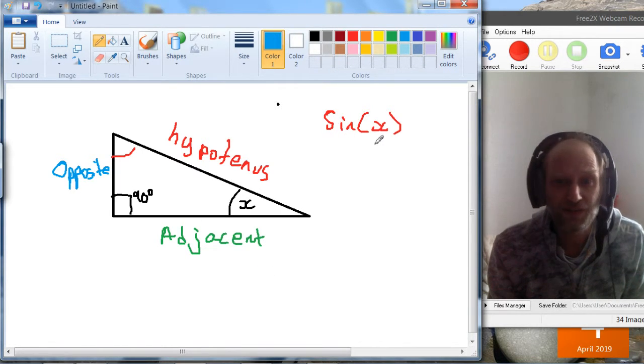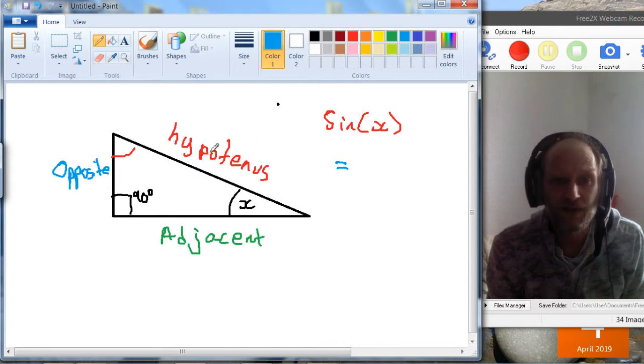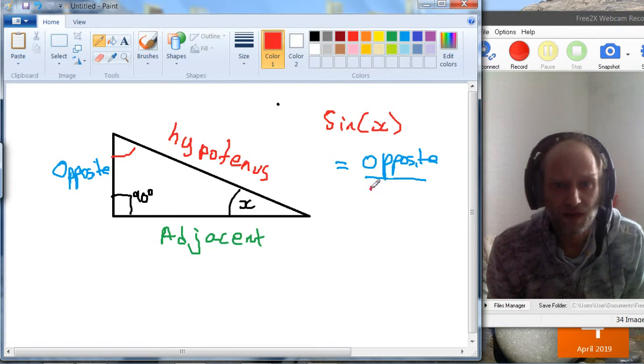So this function in the calculator, sine x, the value it gives you back out is actually the opposite over the hypotenuse.